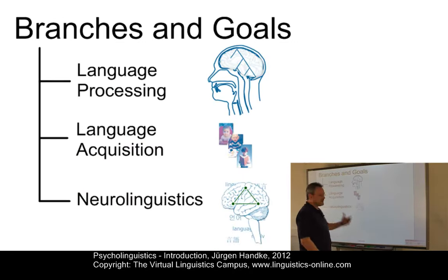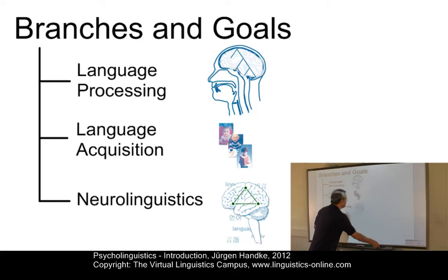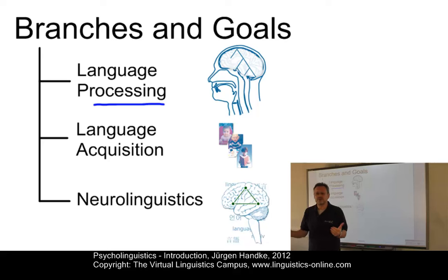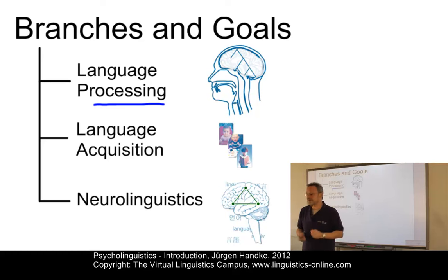Here are the main branches of psycholinguistics. The central questions in language processing, for example: what happens in the human mind when we speak or when we listen? What are the central processes and mechanisms underlying this very complex activity?